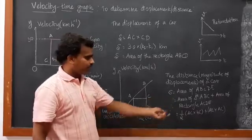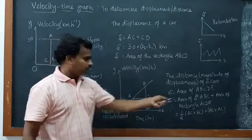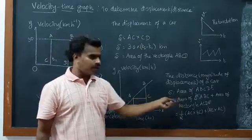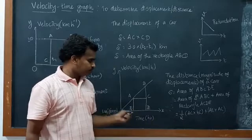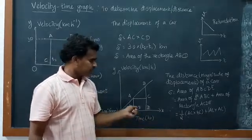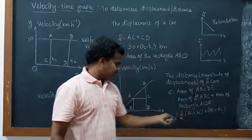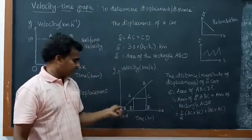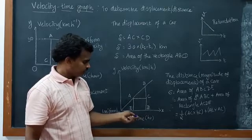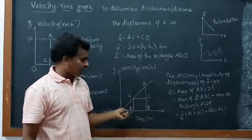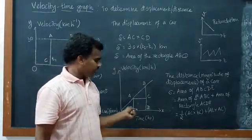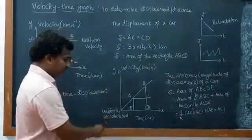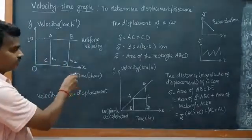Area of ABCDE equals area of triangle ABC plus area of rectangle ACDE. The formula for area of a triangle is half into base into height — so one-half times AC times BC, where AC is the base and BC is the height — plus for rectangle ACDE, length times breadth equals AE into AC (or ED, both are the same). From that we can find the distance of the moving car.